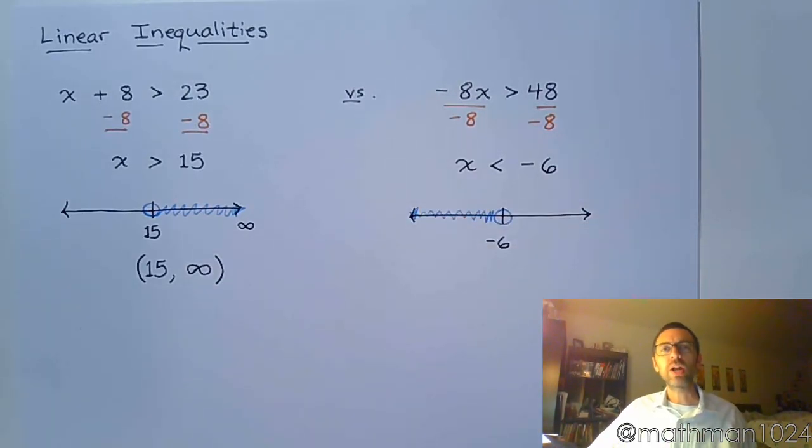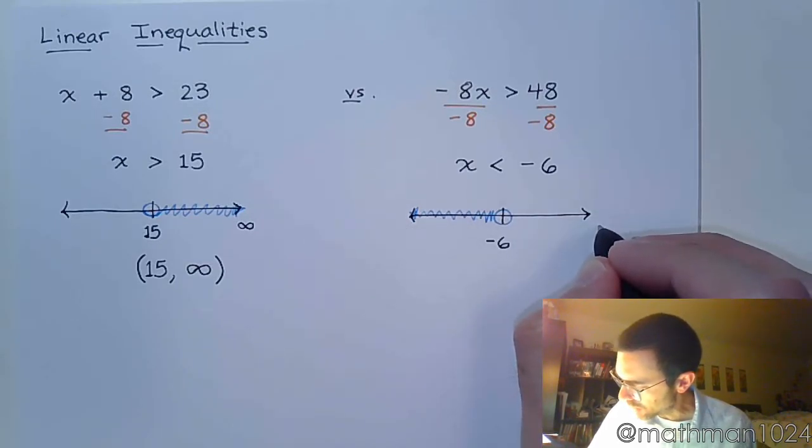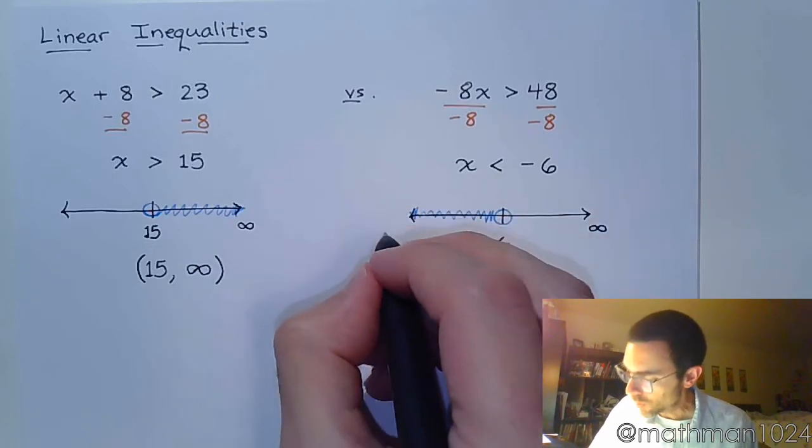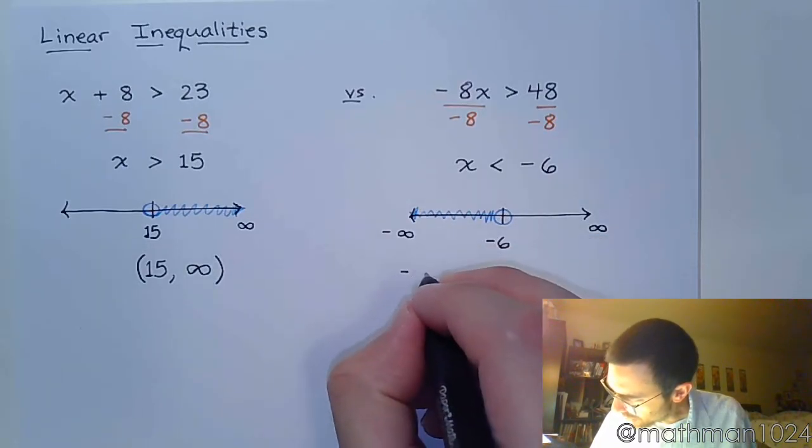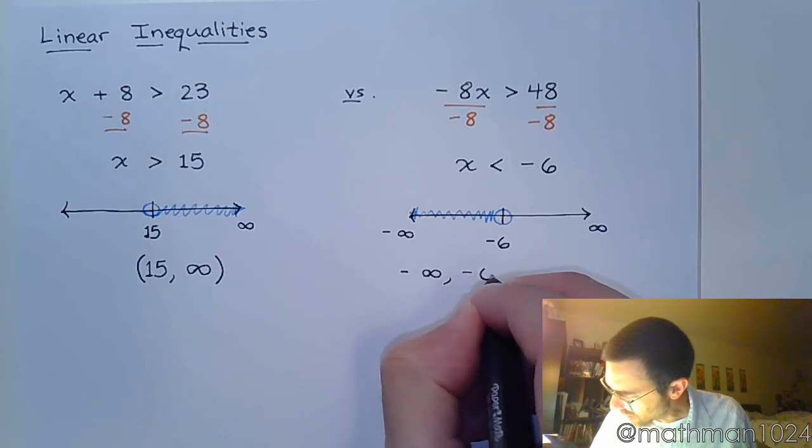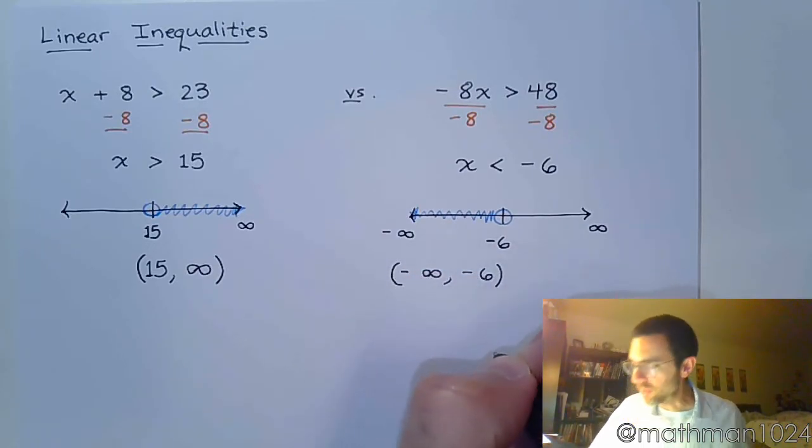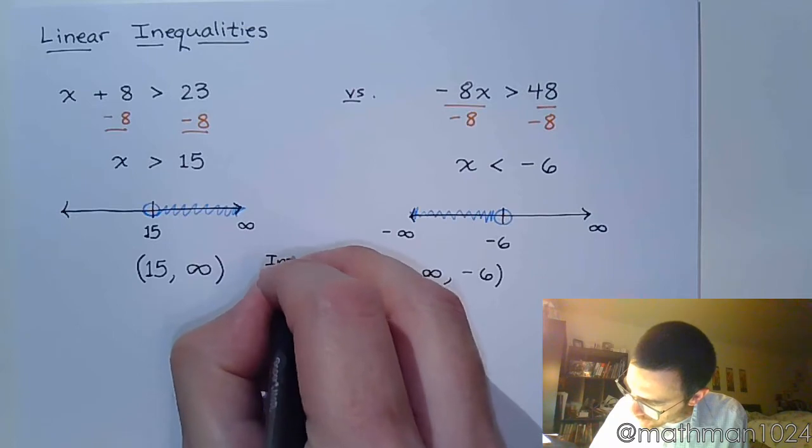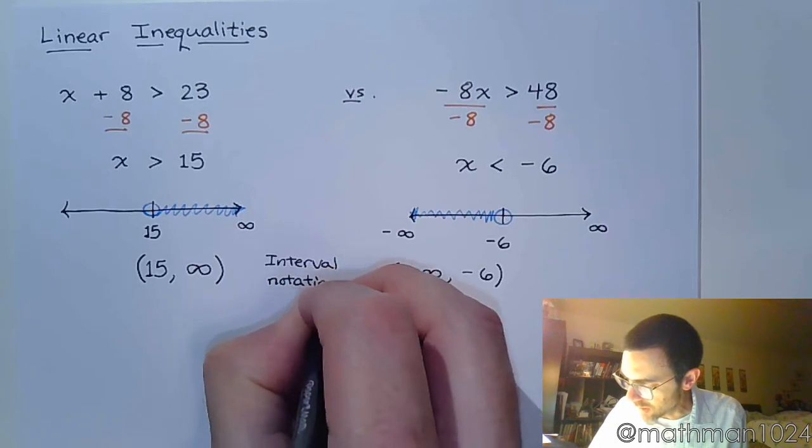And again, we want to write our solution set using interval notation, and we go from left to right. On the far left here, this guy is going all the way to the left, so we use negative infinity to describe how those negative values get bigger and bigger without bounds. We're coming from negative infinity to negative 6. We have no endpoints that are included, so we use parentheses for both of these.